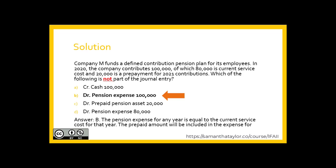The correct answer is B. A debit to pension expense in the amount of $100,000 is not correct. That is because the pension expense for the year is equal to the current service cost and any past service costs. The prepayment of $20,000 is going to be reflected as a prepaid pension asset of $20,000, and therefore would not be part of the pension expense for 2020.